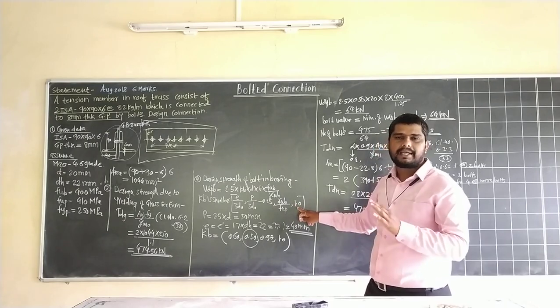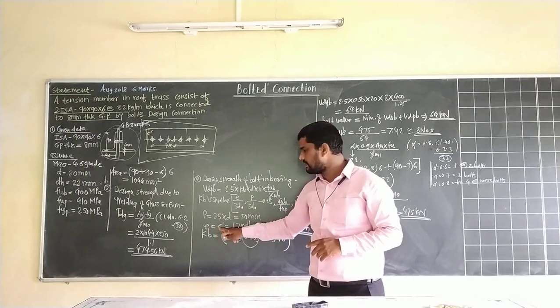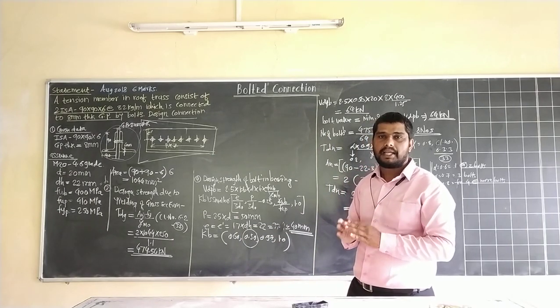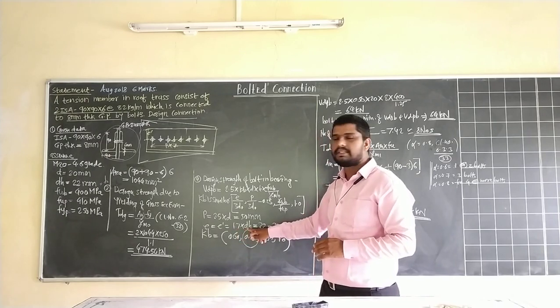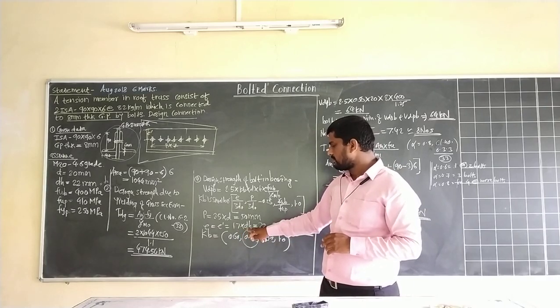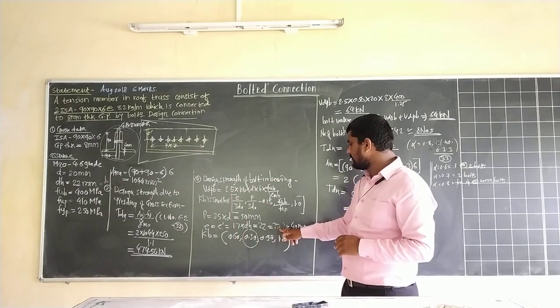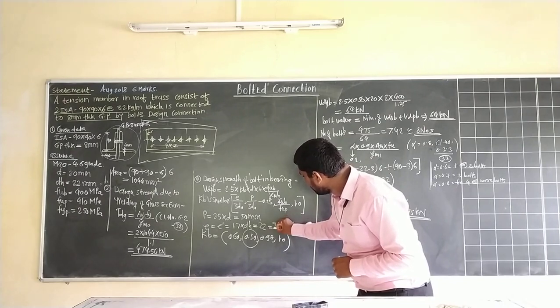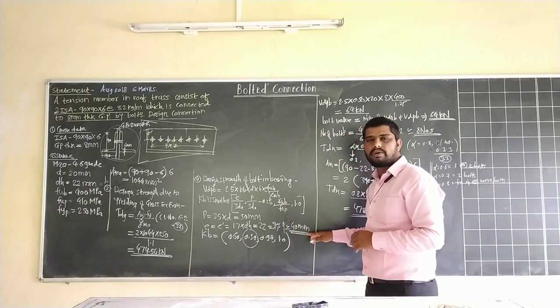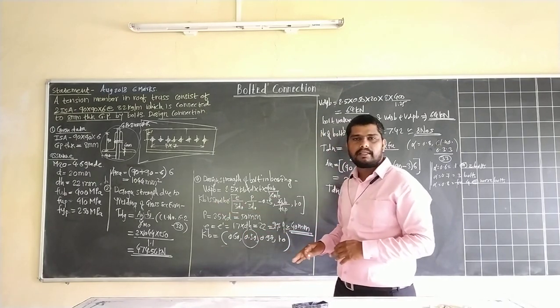E equals end distance, also S distance. For the connections hand, frame, edge, provide 1.7 into D_0 or D_H, diameter of hole. 1.7 into 22 mm gives 37.9 or approximately 40 mm. This is end as well as edge distance. From these values we substitute in K_B formula.